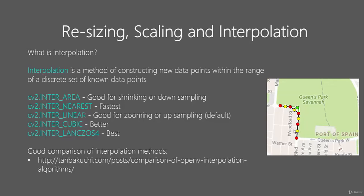Interpolation refers to the methods we use to generate these in-between pixels. In a GPS-type example, going up in a straight line and placing a pixel here is a fairly good idea. However, using linear interpolation — meaning a straight line joining between pixels — doesn't actually reflect the true path.